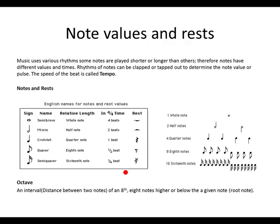Let's move along to note values and rests. In music we use various rhythms. Some notes are played shorter or longer than others; therefore, notes have different values and times. Rhythms of notes can be tapped out to determine the note value or pulse. This has nothing to do with tempo — a rhythm is just how you play your notes, shorter or longer, while keeping a constant tempo.